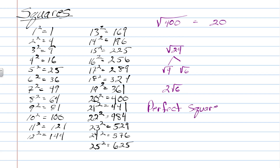The perfect square numbers are the numbers on the right here. When you square a number like 1, 4, 9, 16, 25, all the way up through 529, 576, 625 — those are perfect square numbers because you can take the square root of them without getting a decimal. That's going to be important as we move along in this lesson on simplest radical form.